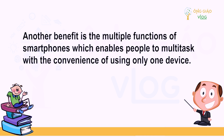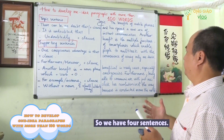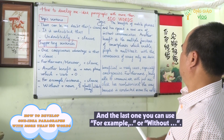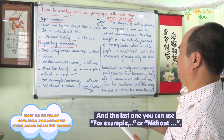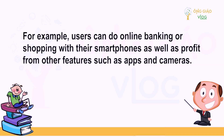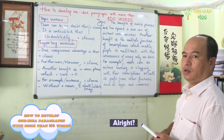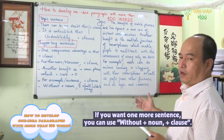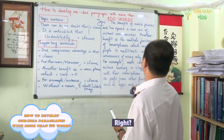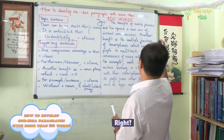We now have four sentences. For the fifth, we give an example: 'For example, users can do online banking or shopping with their smartphones, as well as profit from other features such as apps and cameras.' That gives us five sentences. If you want one more sentence, you can use 'without.'